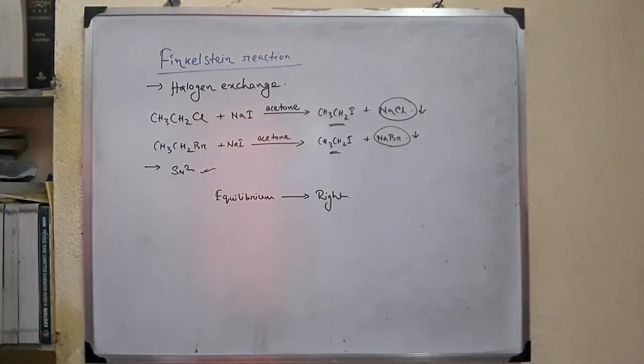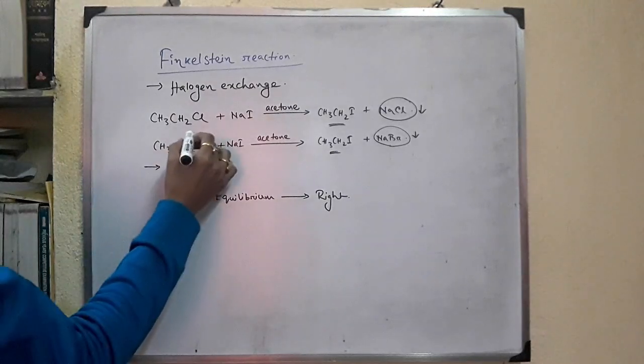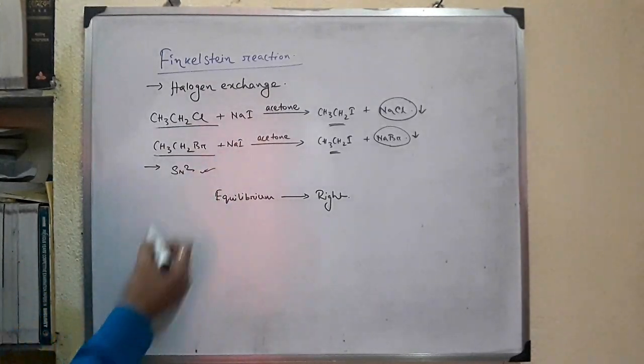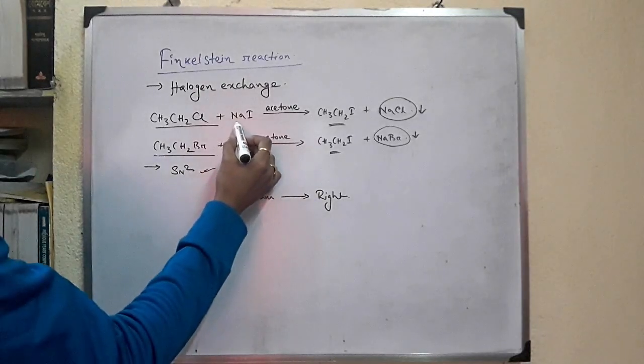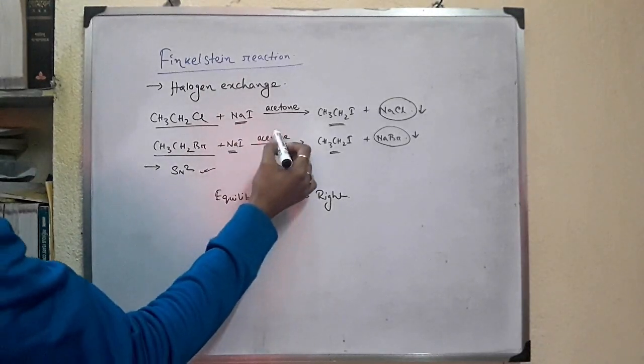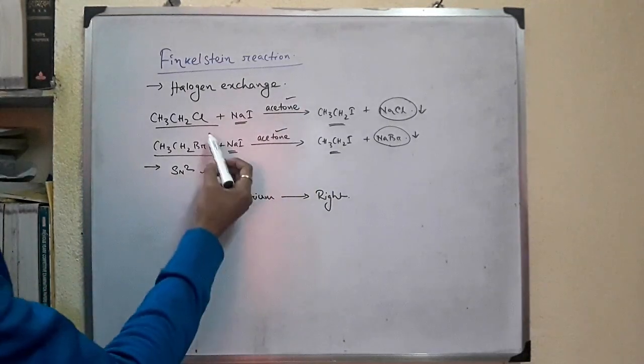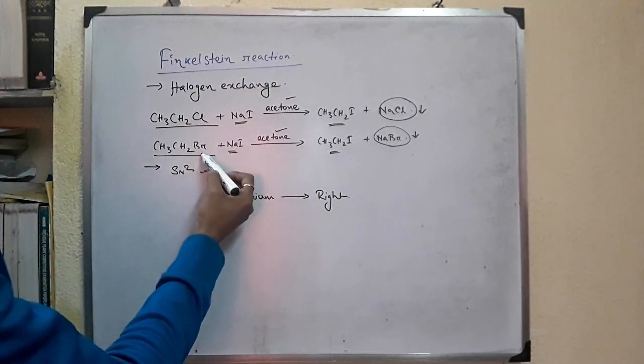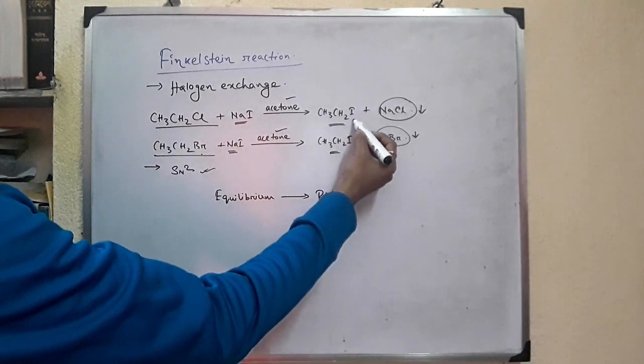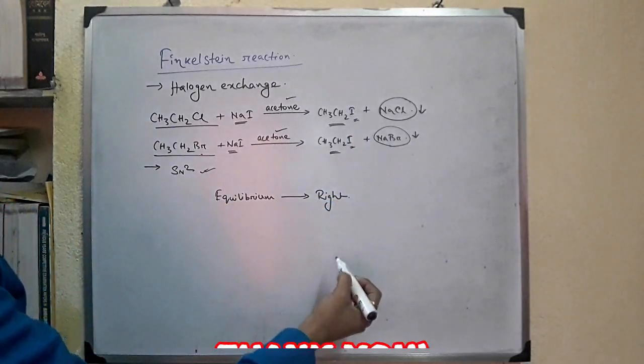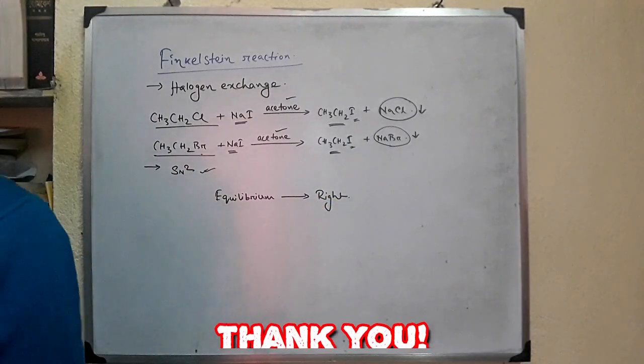So overall, the treatment of alkyl chloride or alkyl bromide with sodium iodide in acetone leads to the replacement of the halide by iodine via SN2 mechanism.